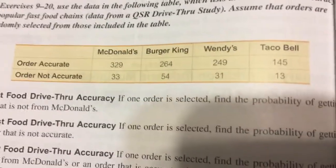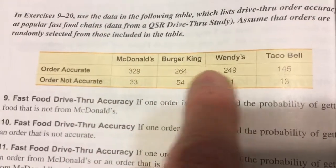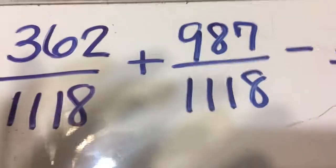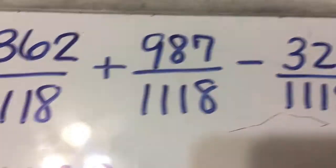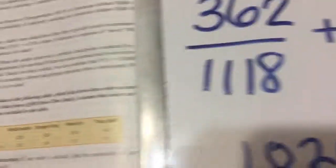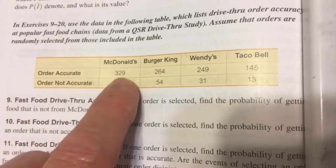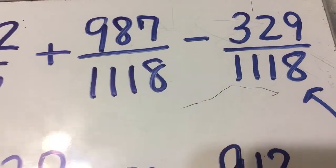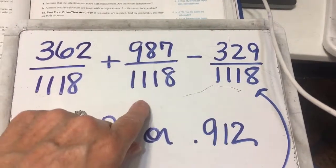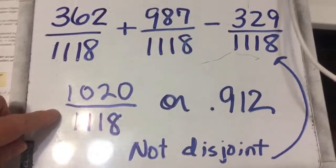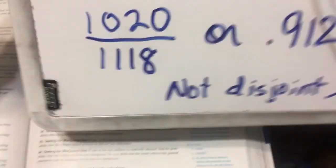Then we're supposed to find the probability that the order is accurate. Adding all of the accurate values together, I got 987 out of 1,118 that were accurate. Then I'm going to subtract the probability of both — that they're from McDonald's and accurate. Coming back to the chart, the order accurate from McDonald's is 329 out of the total. So using the addition rule: probability of McDonald's plus probability of accurate, take away the probability that it's from McDonald's and accurate, and I end up getting 1,020 out of 1,118.